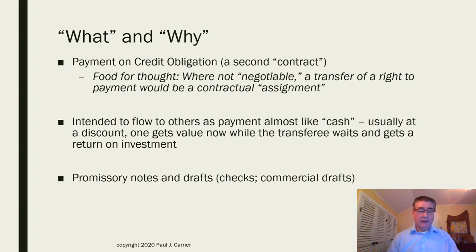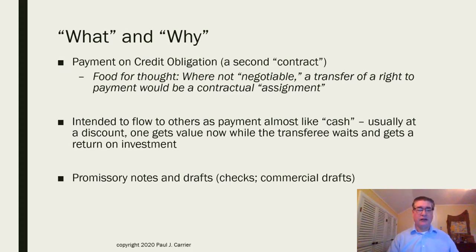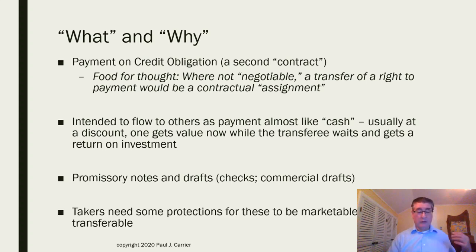These instruments take a few forms. There are promissory notes — a simple IOU: 'I promise to pay you $5,000 in 10 years,' or installment payments of '$100 a month for five years.' There are also drafts. Drafts where you deal with a bank holding your checking account are called checks, the most popular form of draft. Businesses can create commercial drafts involving only buyer and seller, but those are relatively specific and not particularly testable, so we'll leave commercial drafts out of this presentation.